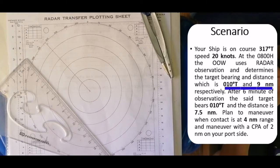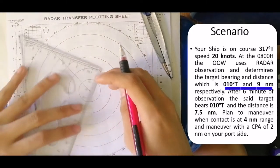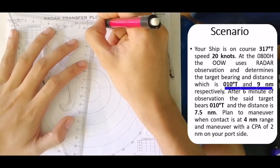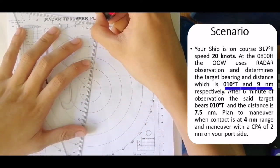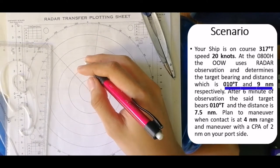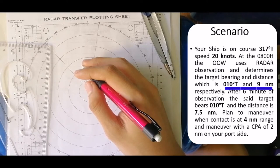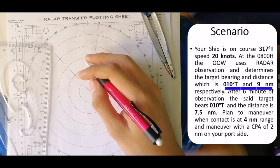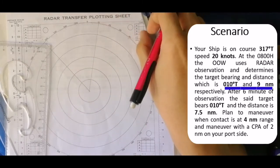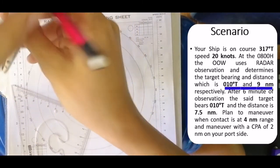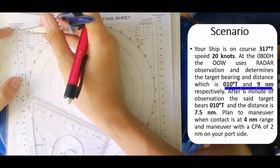The first observation at 0800 hours is at 10 degrees with a nine nautical mile range. For the second observation at 0806 — a six-minute interval — also 010 degrees with a range of 7.5. Since they're on the same bearing, use your compass and the 12-mile range scale to measure 9.5.